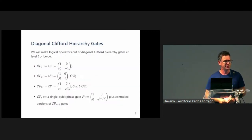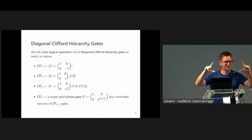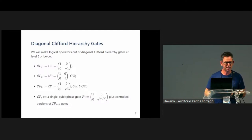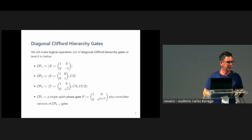The logical operators I'm going to look at are made out of the diagonal Clifford hierarchy gates. These come in various levels: the first level just involves the Z operator. The next level includes an S gate — the square root of Z — and also controlled Z operators, so I'm thinking about multi-qubit gates in the hierarchy. The third level includes T — the square root of S — a controlled S, and a controlled controlled Z. The pattern is that the diagonal Clifford gates at level T include a single-qubit phase gate plus controlled versions of all the controlled phase gates at the level below. These are the gates I'll use to make my logical operators.